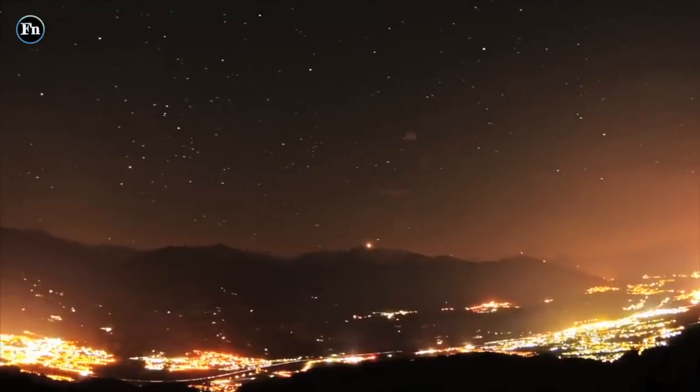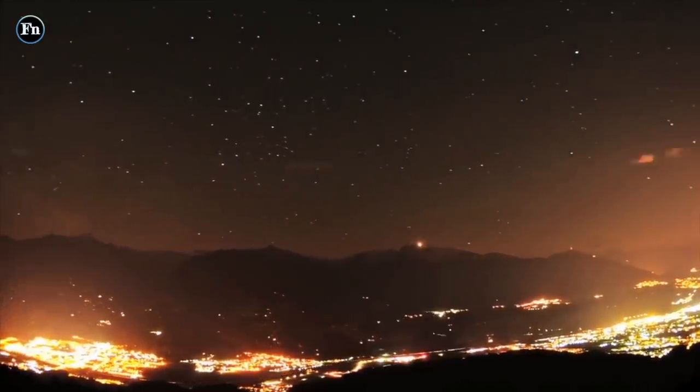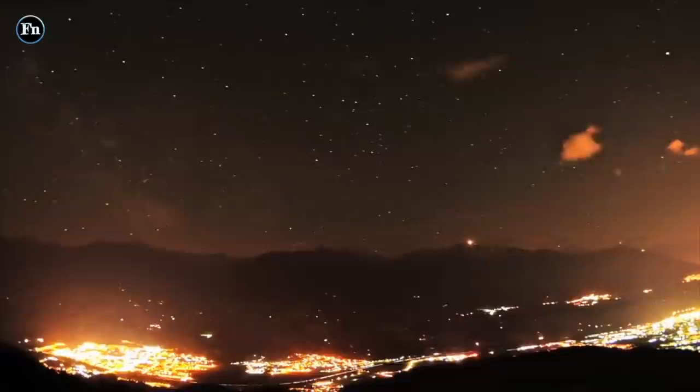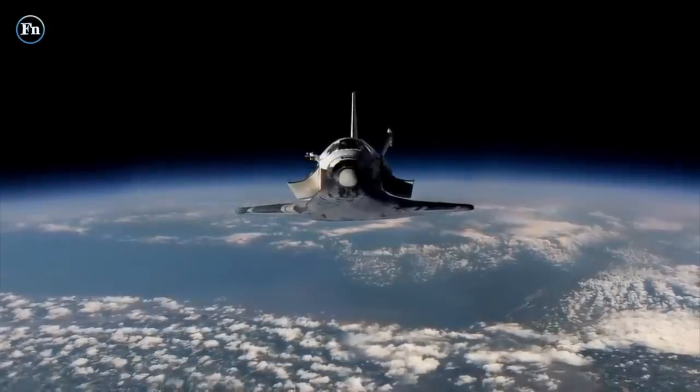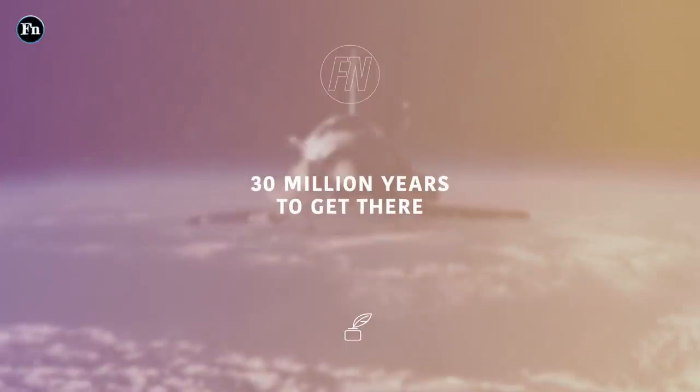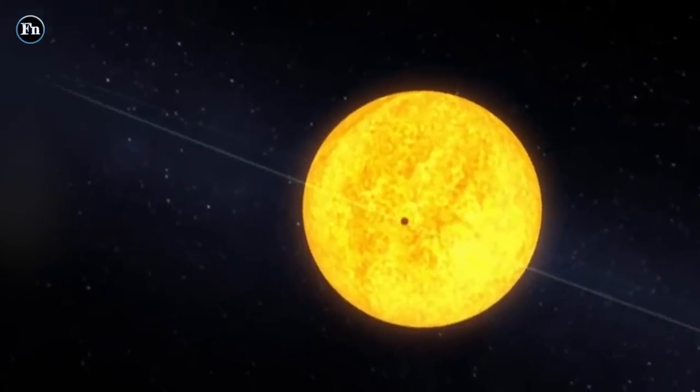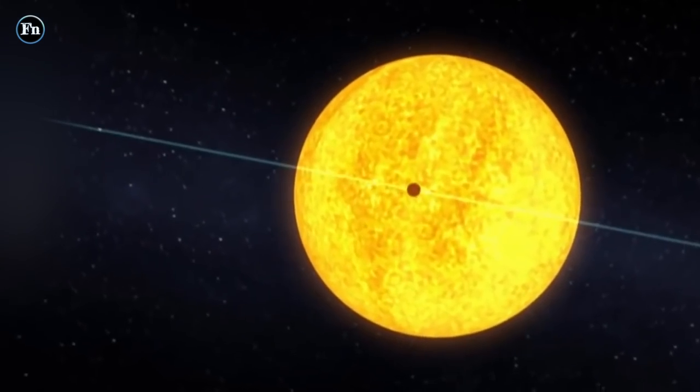Kepler-452 is about 1,800 light-years away, so far away from us that it currently would take a spacecraft approximately 30 million years to get there. At least one possible sibling orbits the star: Kepler-452b.